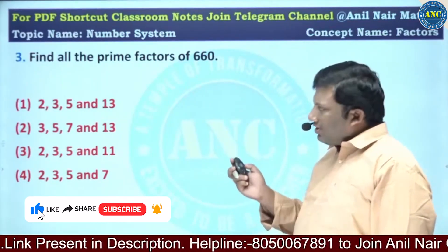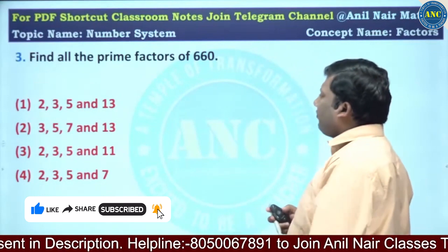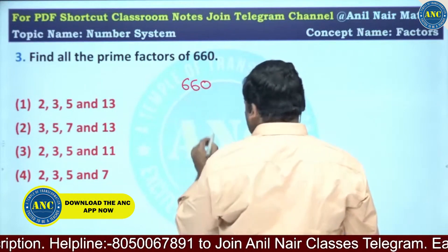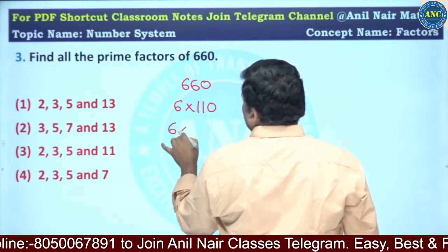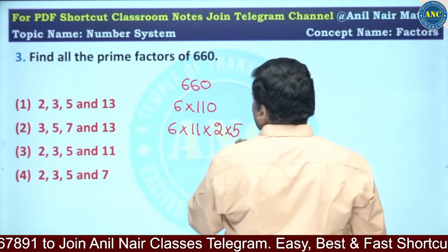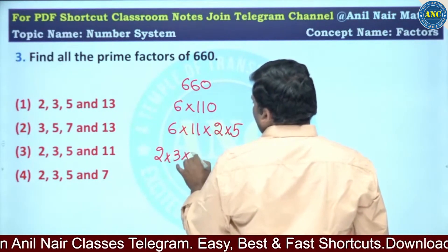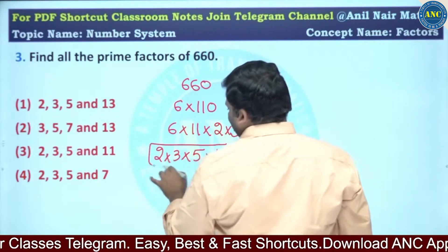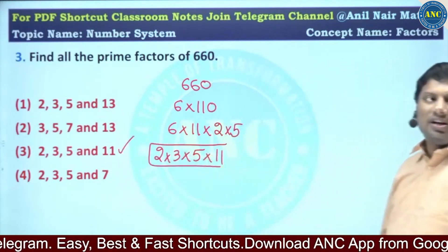First we will solve some easy questions. Find all the prime factors of 660. 660 is a composite number: 6 into 110, which is 6 into 11 into 10, and 10 is 2 into 5. So it becomes 2 into 3 into 5 into 11. The prime factors of 660 are 2, 3, 5, and 11.